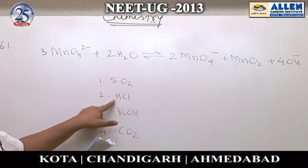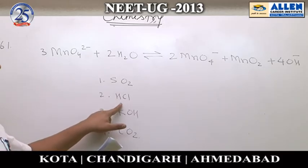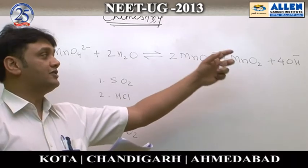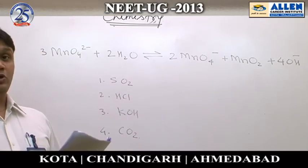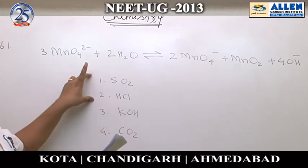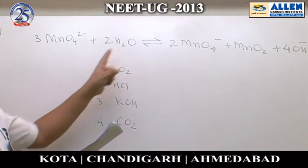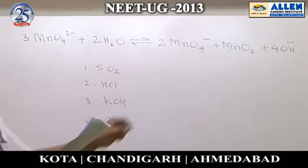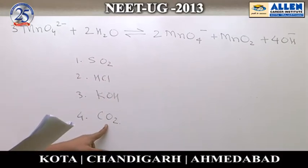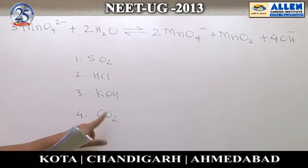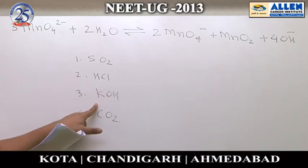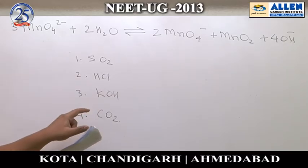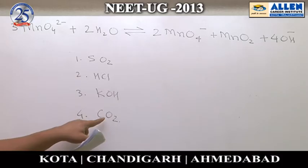The next option is HCl. Can it remove the OH⁻ ion? The answer is again yes, but the problem is that it can also be oxidized by KMnO₄. So we need something that is acidic in nature and should not be oxidized by this compound. That is why the appropriate answer is CO₂, because CO₂ is acidic in nature and the oxidation state of carbon is +4, indicating that it cannot be oxidized further.